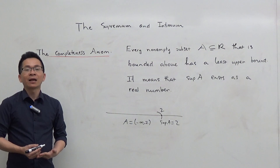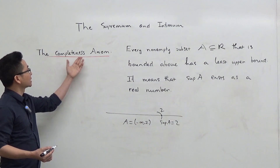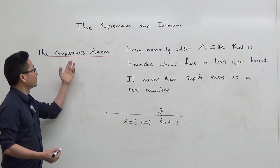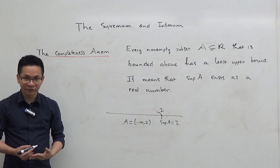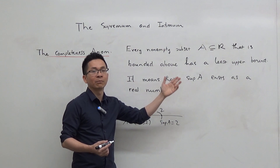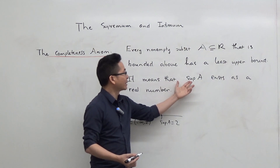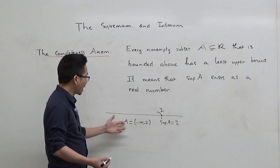Now there is a very natural question: if A is a subset of the real line, under what conditions does A have a supremum? The completeness axiom gives an answer to that question. In mathematics, an axiom is a statement that is largely accepted as true without proof. The completeness axiom says that every non-empty subset A of the real line that is bounded above has a least upper bound. It means that if A is a subset of the real line, and A is non-empty and bounded above, then the supremum of A exists as a real number.